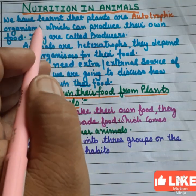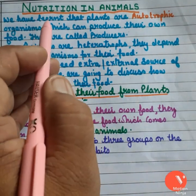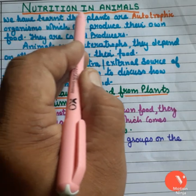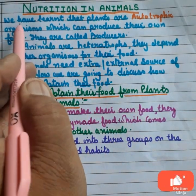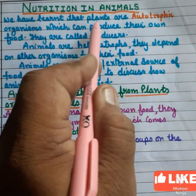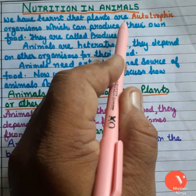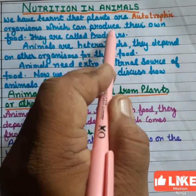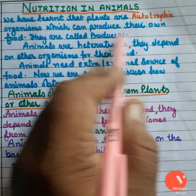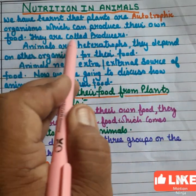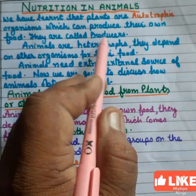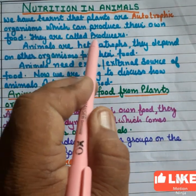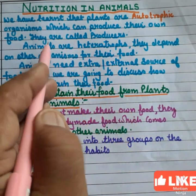Good morning students. Today we are going to describe nutrition in animals. We have learnt that plants are autotrophic organisms which can produce their own food. These are called producers. Organisms which produce their own food are called producers.